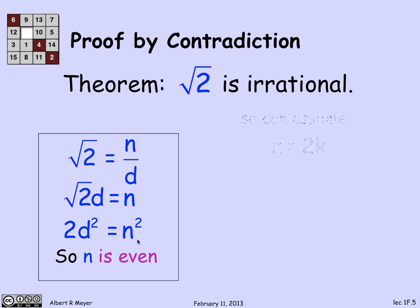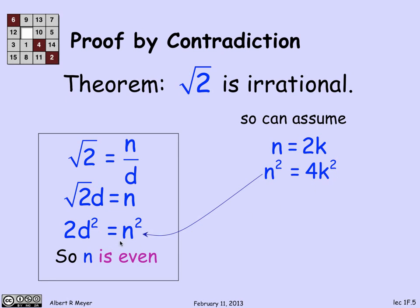Let's keep going. Since n is even, it's equal to twice something — n = 2k for some number k. Let's square both sides of that and conclude that n² = 4k². Why did I square it? So that I could connect up with the other equation about n², that n² = 2d². Combining these two, I get that 2d² = 4k².